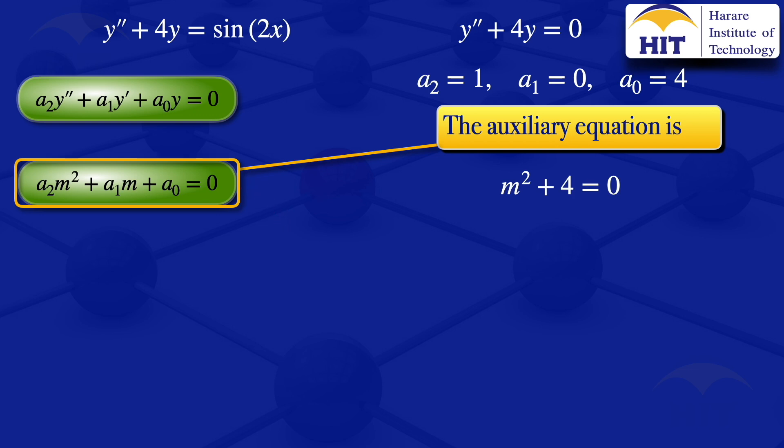We go on and solve for m. Putting the 4 on the right-hand side gives m² = -4. Taking square roots on both sides, we have m = ±2i.